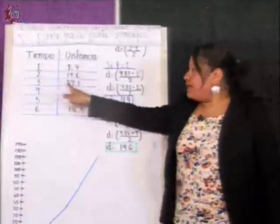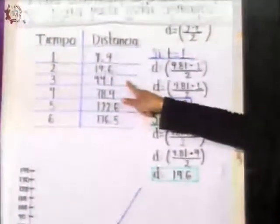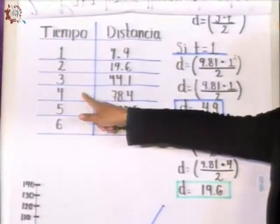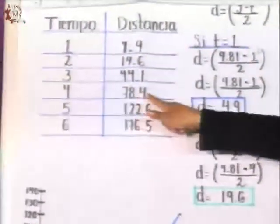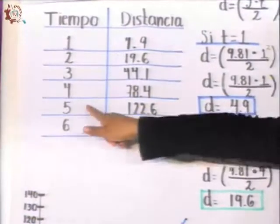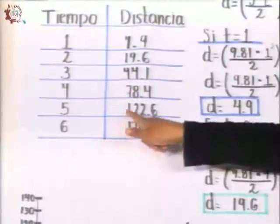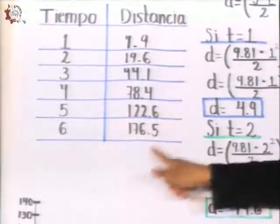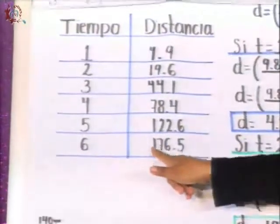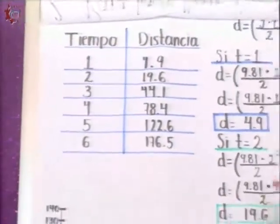For time 3 it would be 44.1, for 4 seconds it would be 78.4, for 5 seconds 122.6, and for 6 seconds 176.5.